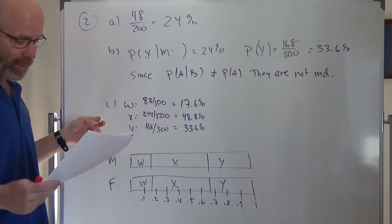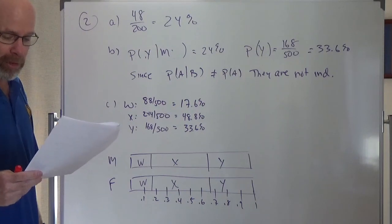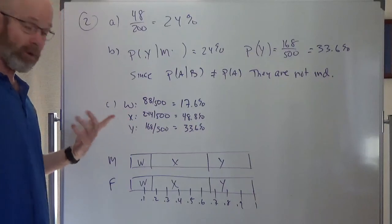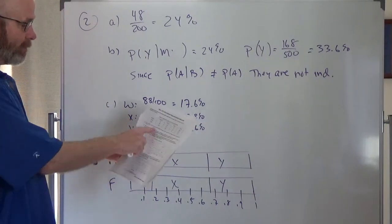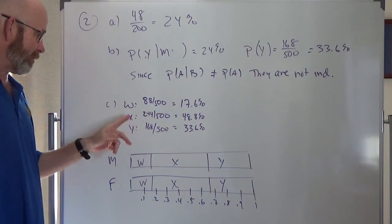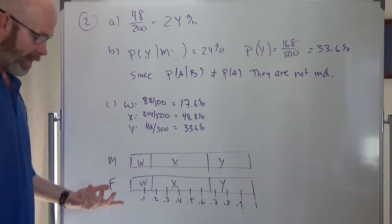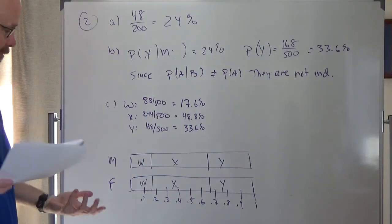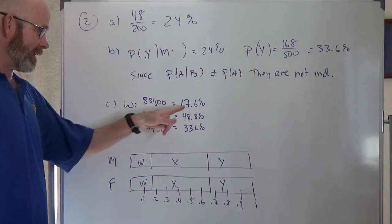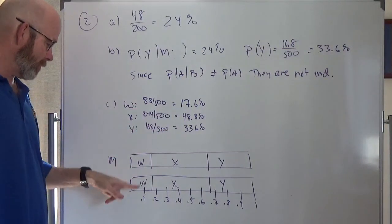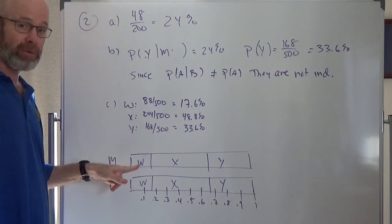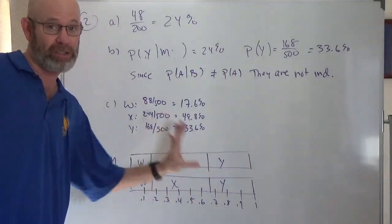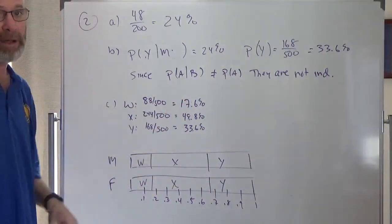The last question says, we've got this other township. The proportion of registered voters for WXY are the same as Franklin Township. So I found those proportions first. So I just went back up to these ones, right? So W was 17%, roughly X was 48%, Y was 33%. And then it said, given that gender and voter party are independent, complete the graph. So if they're independent, what that means is 17% of the females should be in W. 17% of the males should be in W. 48% of the females should be X and so on. So they should be the same. These two things should be exactly the same. They should match that percentage.